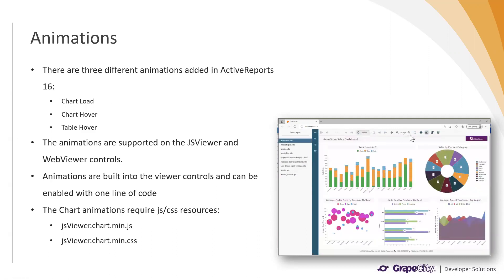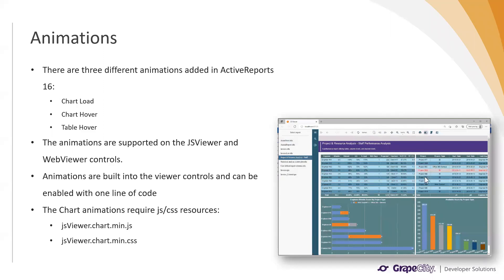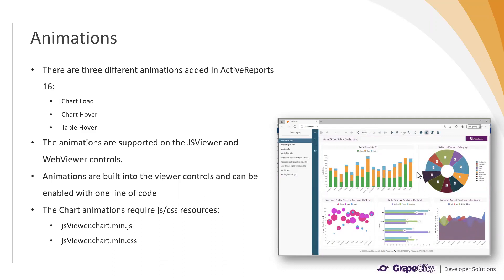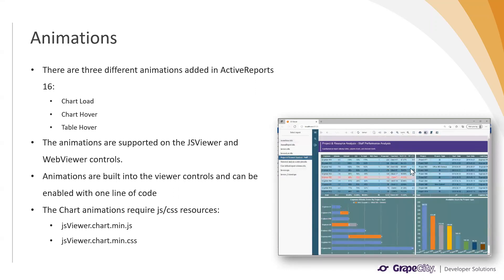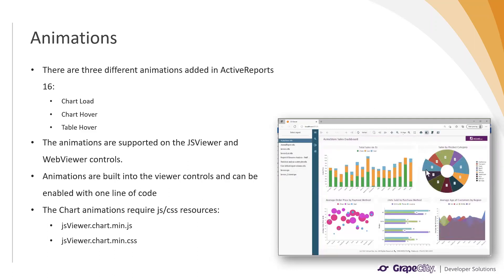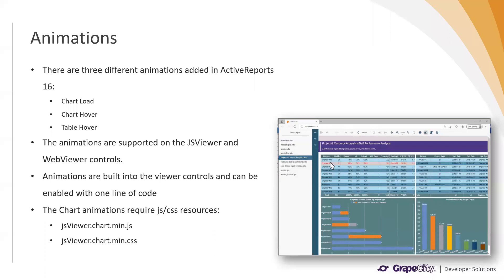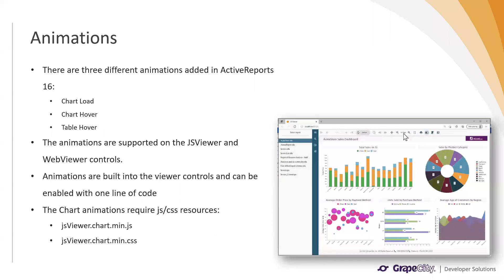We added certain animations in this release — chart load, chart hover, and table hover animations, as you can see in the GIF. These animations are part of the viewer itself, not the report, and are supported in the JS viewer and web viewer controls. Enabling animation is really one line of code. For chart animations specifically, the viewers need the jsviewer.chart.min.js and CSS files to be included, referenced, and linked in your pages.